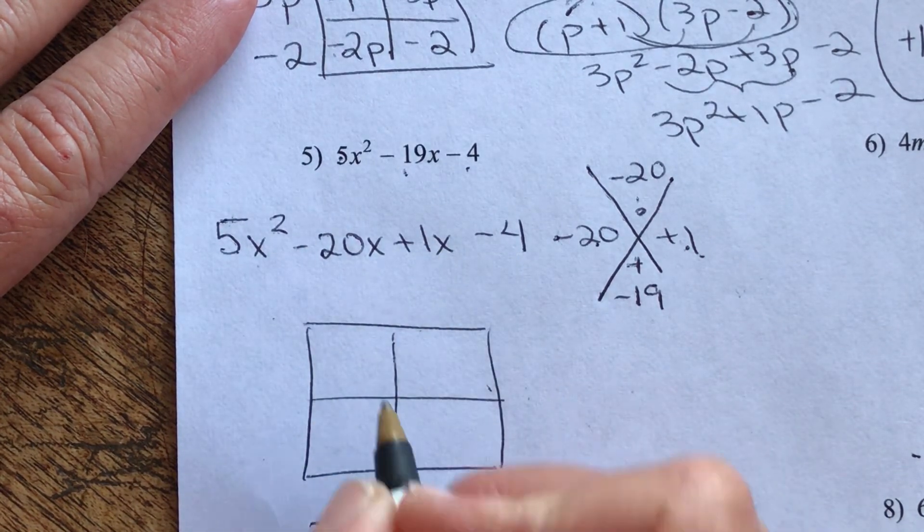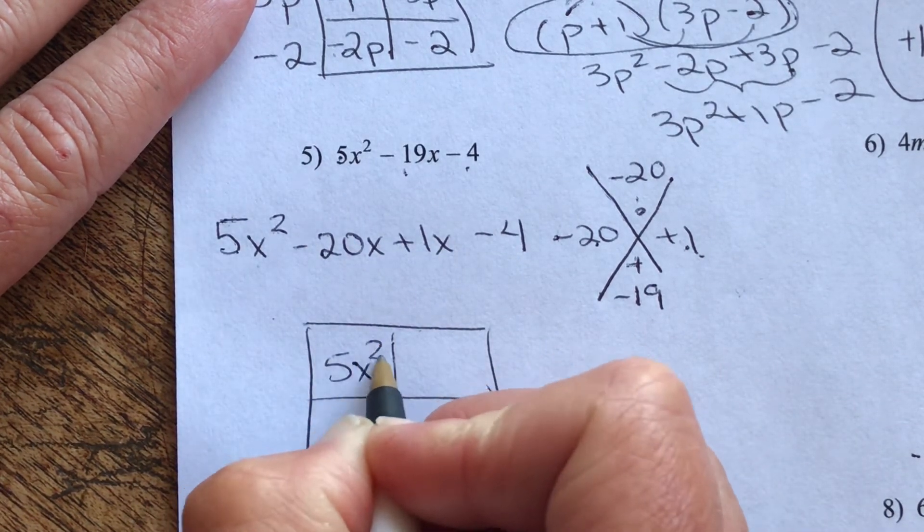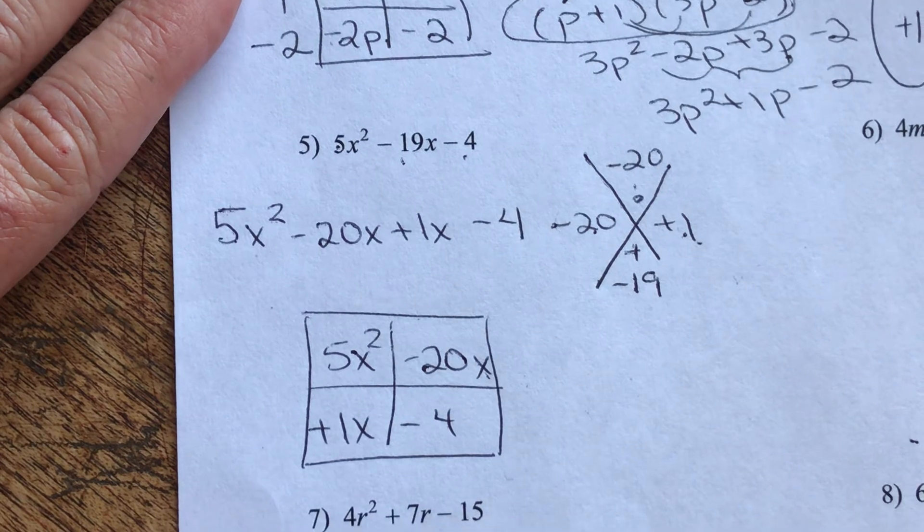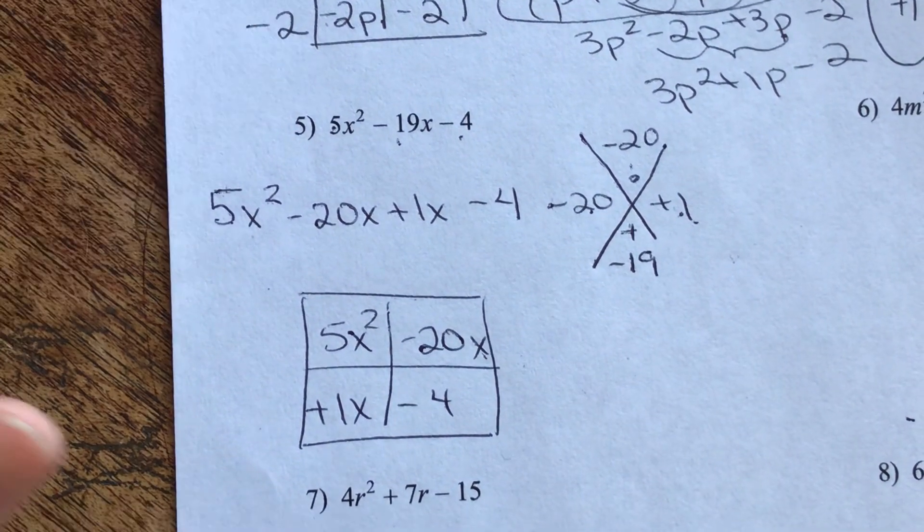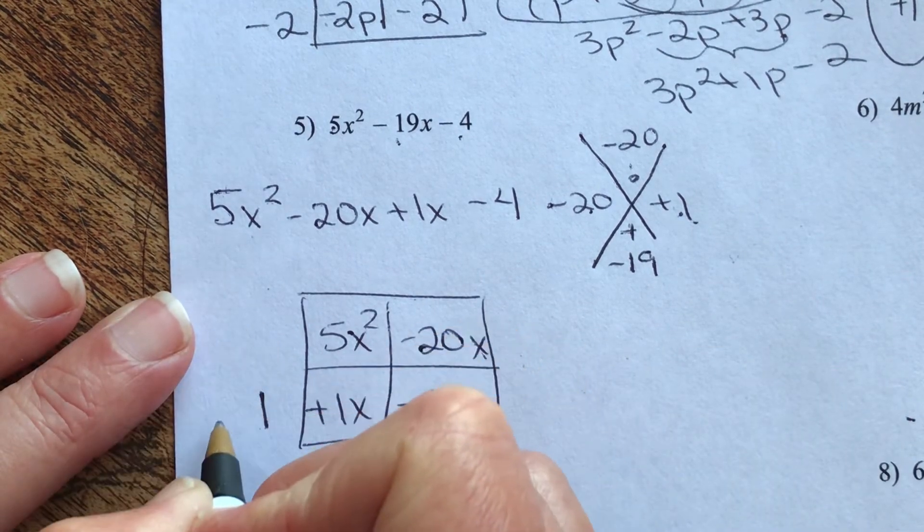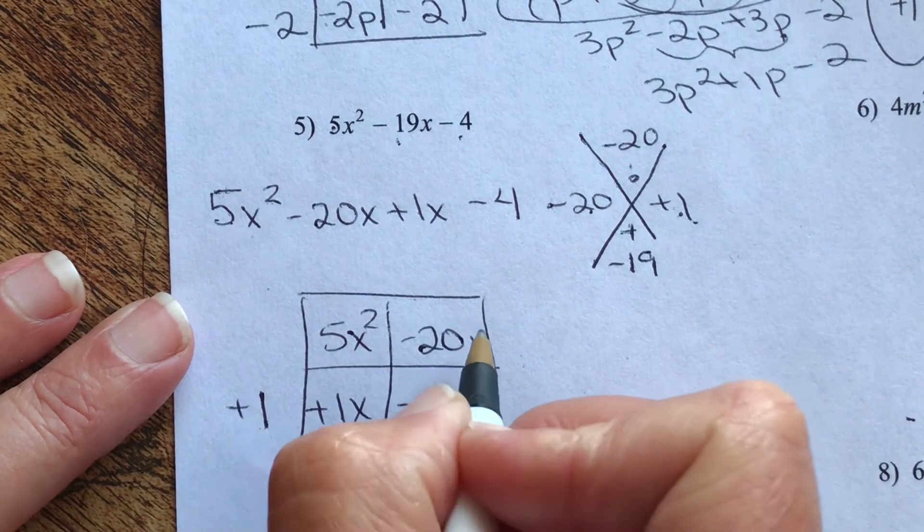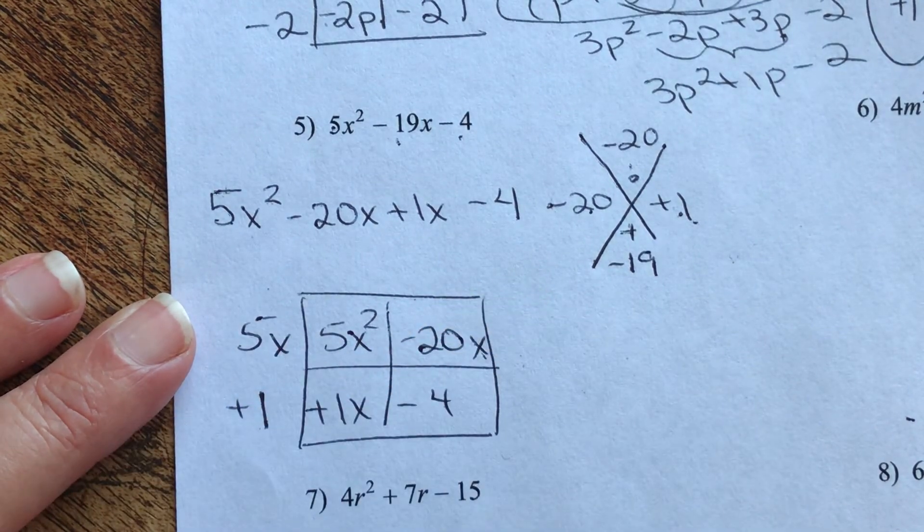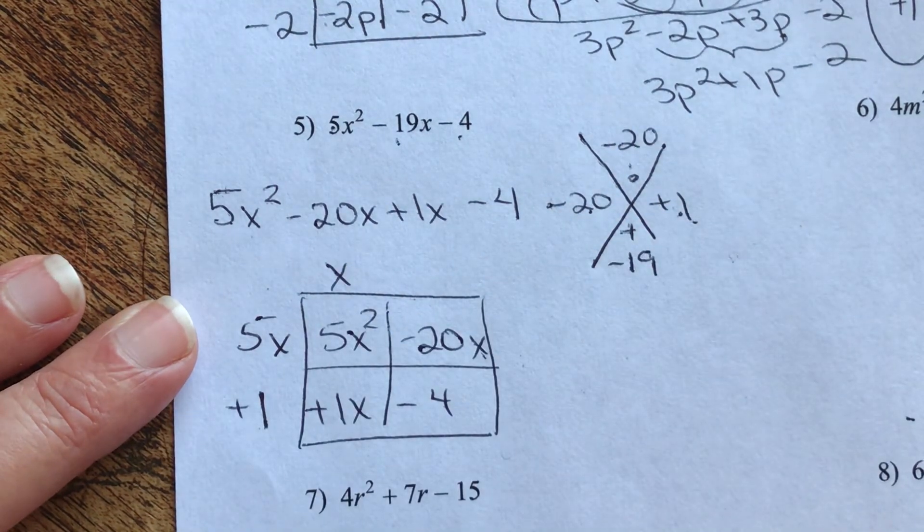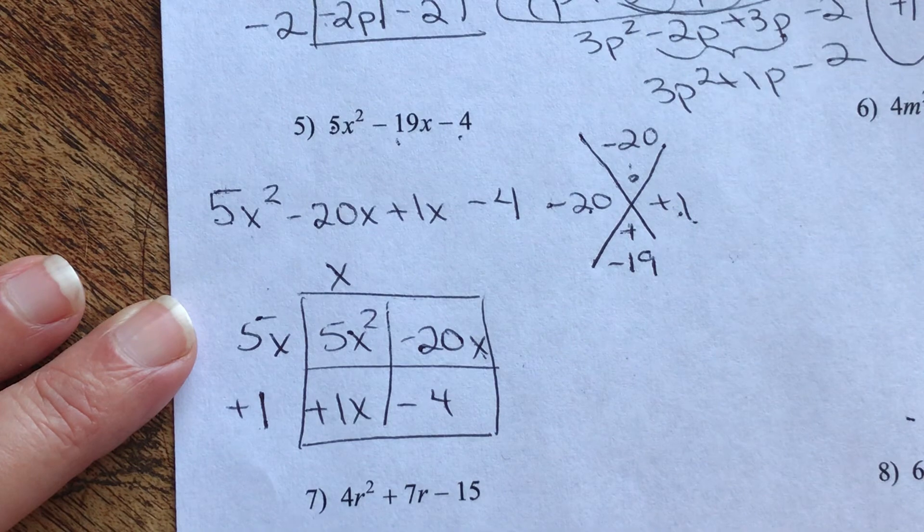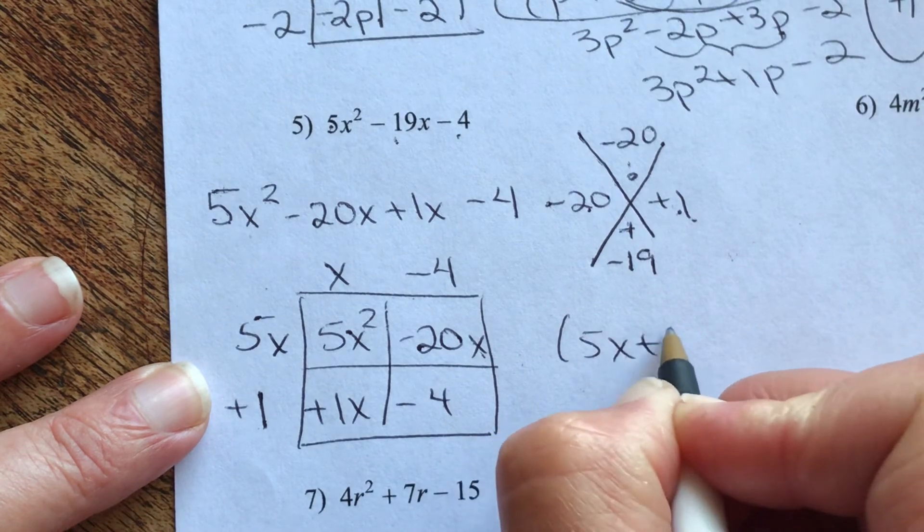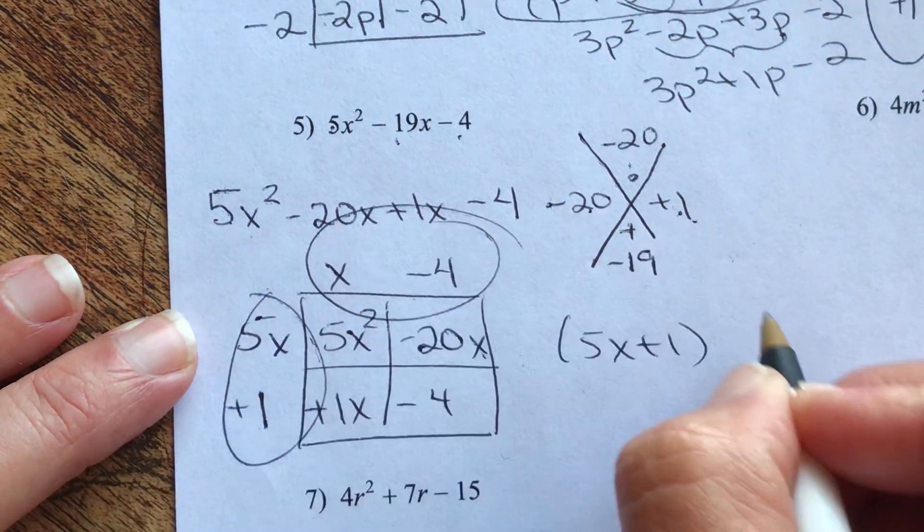Now we're going to go to our Punnett square. Here's our four terms. We have four boxes. Quite convenient. Now we're going to write them in. Wonderful. Now you're going to find the GCF of each column and row. So here we go. That's positive 1 to be exact. That's going to be a 5x. This is going to be just an x. And because this next one starts with a negative, we have to ensure that we also have a negative in our final answer.